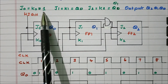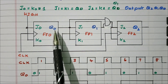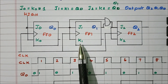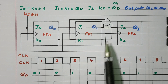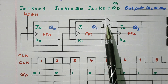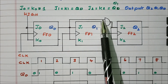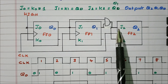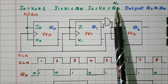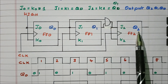For the second flip-flop, the inputs are the output of the first flip-flop. Q0 is connected as input to J1 and K1. For the third flip-flop, the input is connected through an AND gate using Q1 and Q0. Both Q1 and Q0 are connected to the AND gate, and the output of the AND gate is connected to J2 and K2. So if both Q1 and Q0 are high, the output will toggle.